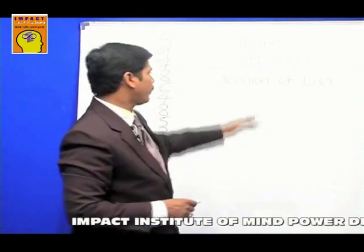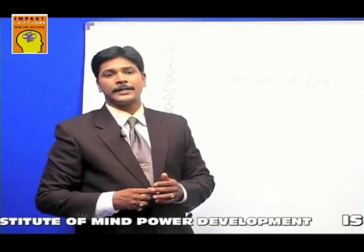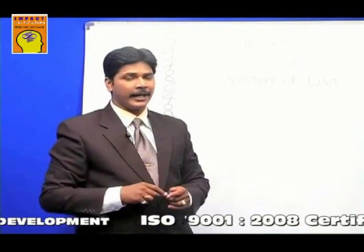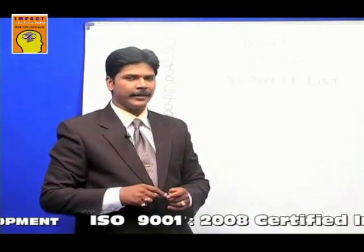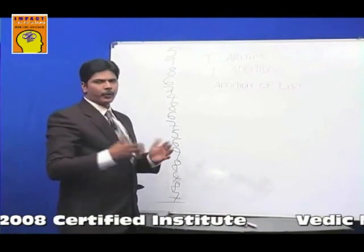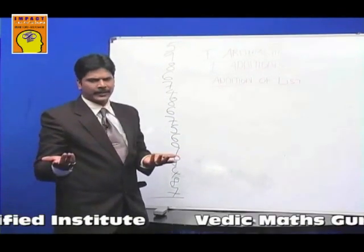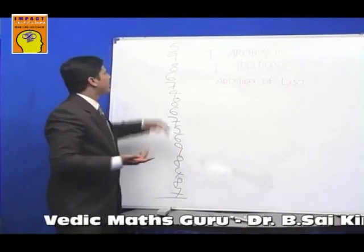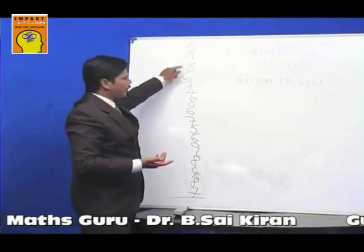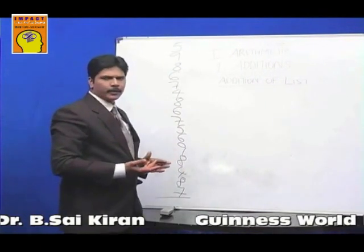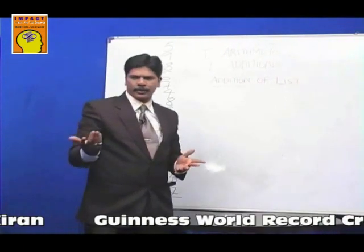Now we will see addition of lists. This technique in the Vedas is known as Rekha Ankhana — Rekha means line, so we are adding using lines. Let's consider a big list. Usually what we do, not knowing any technique, we add in a linear way: 5 plus 9 is 14, 14 plus 8 is 22, and that way we add up the whole list. It probably takes a minute or so.